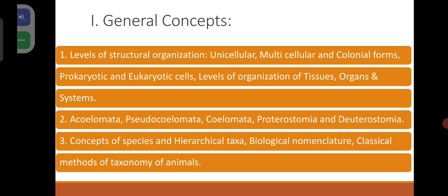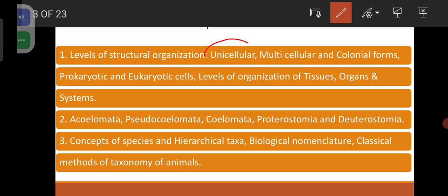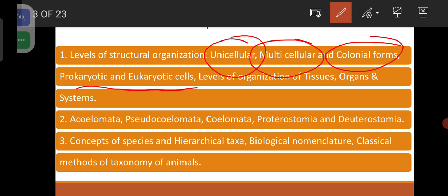The first chapter includes only the general concepts. Levels of structural organization — that means unicellular, multicellular, colonial forms. Prokaryotic and eukaryotic cells — the cells without nucleus and the cells with nucleus. And levels of organization: protoplasmic grade, cellular grade, tissue grade, organ grade, and system grade.